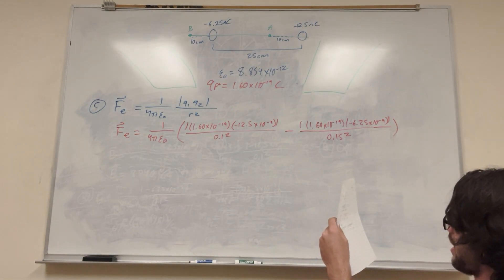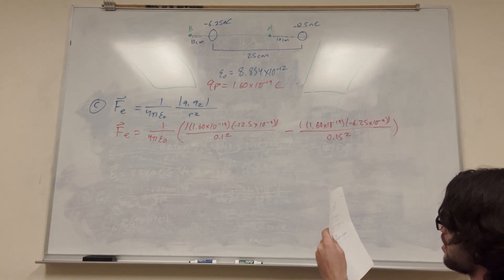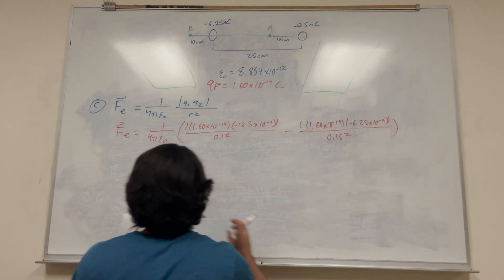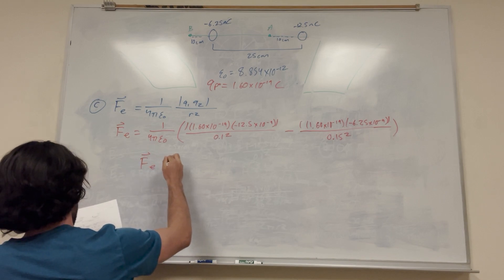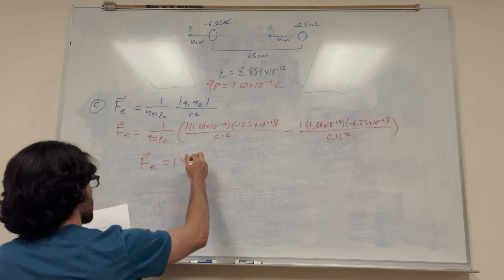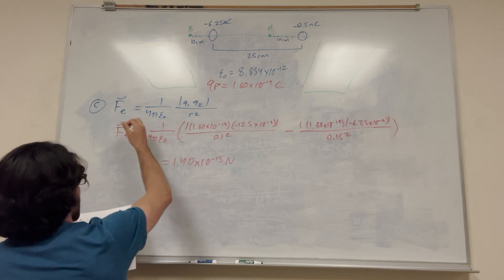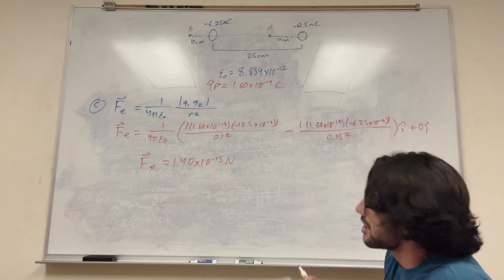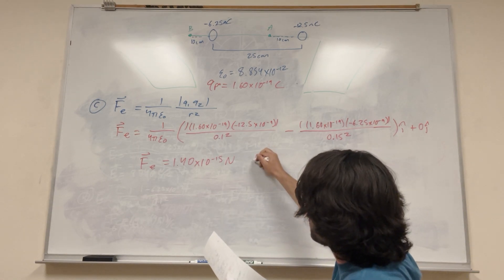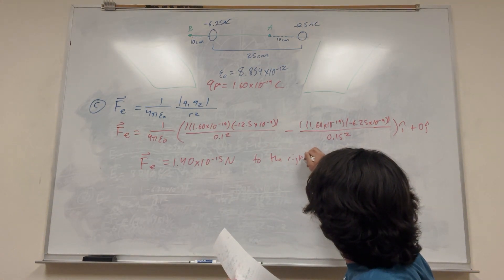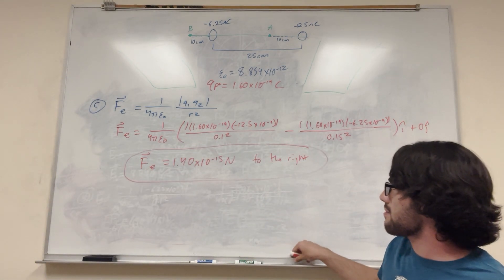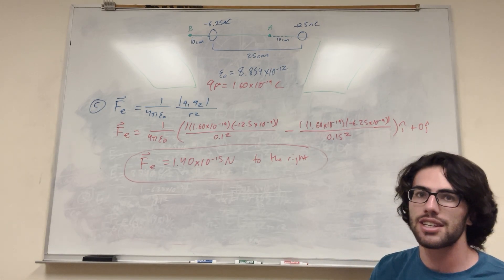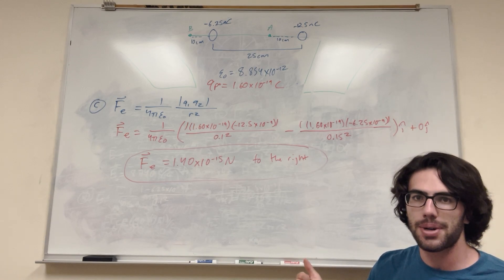If you do the math on this, you're going to get Fe is equal to 1.40 times 10 to the negative 15 newtons. This is also a vector, so you can write it as i plus 0j — there's nothing acting on it in the y direction. It's a positive number, so it's going to the right. That's the final answer for part C. That's how you do this kind of problem: use the equation, find the radius, pretty simple. Good luck on your physics homework, guys. See you in the next one.